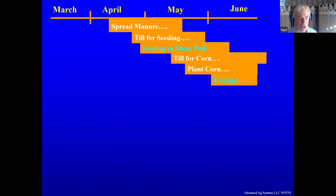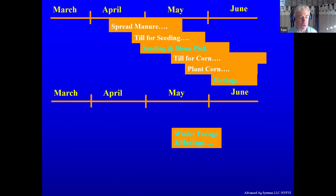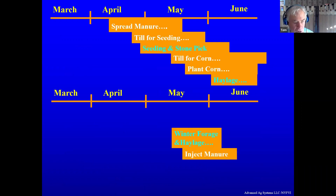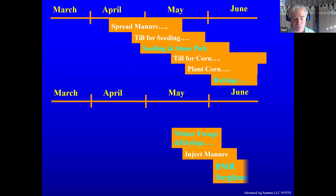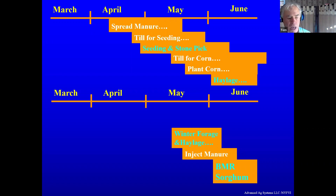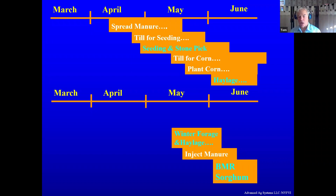Looking at our rotation system and putting these pieces together: we had our corn, but instead we have winter forage that we harvest, we inject the manure, and then we plant our sorghum afterwards. We just shifted the workload around by adding sorghum into the rotation with the corn. You get all those other benefits plus a more balanced workload.